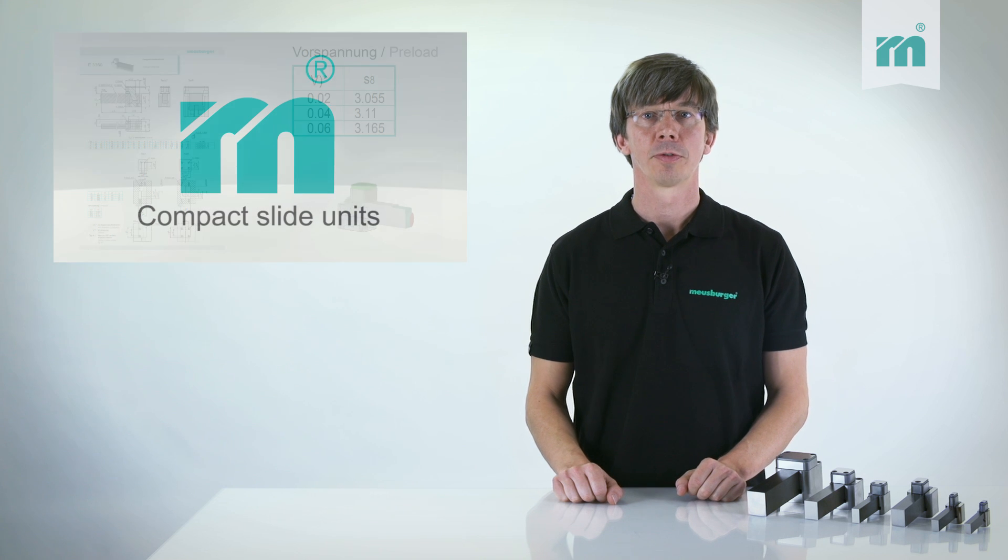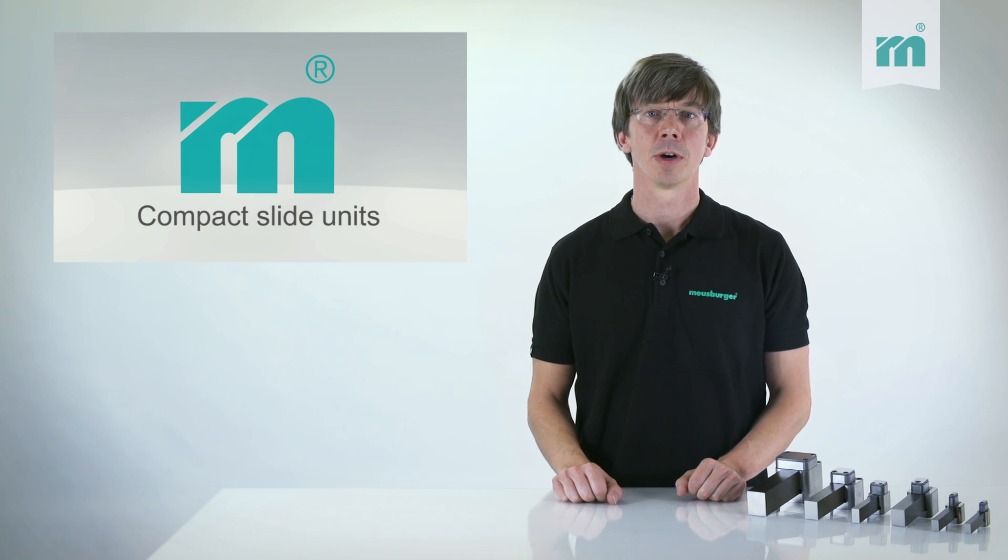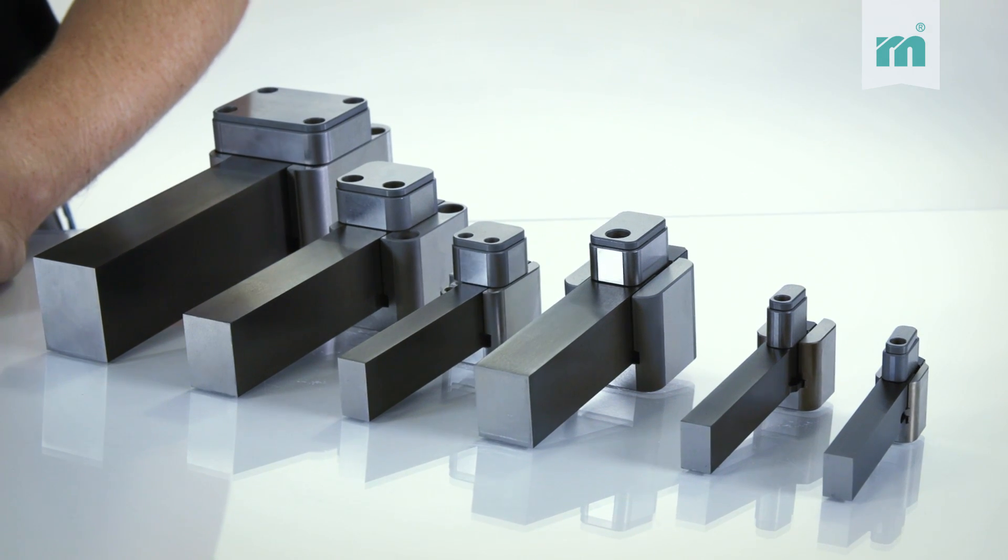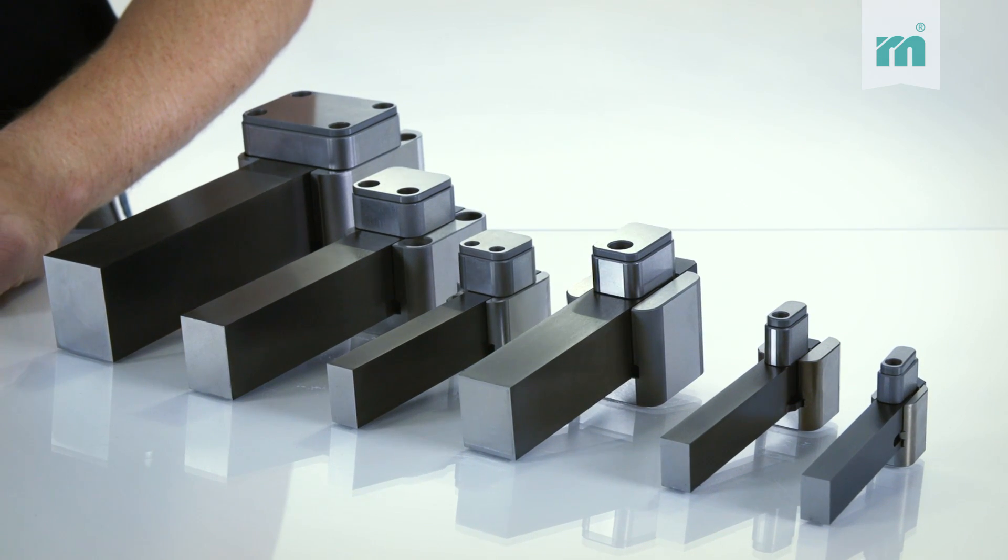The rectangular shape of the components is a clear advantage because it simplifies their installation, and thus no additional anti-twist lock is needed. During the tightening of the screws, everything stays perfectly aligned.